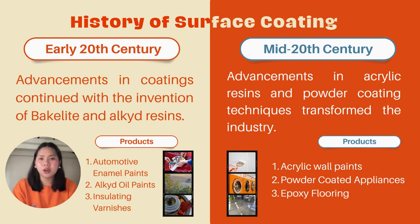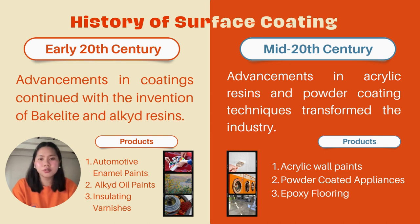The early 20th century witnessed a revolution in surface coating history, driven by scientific breakthroughs, industrialization, and the growing demand for more advanced and diverse coating materials. Innovations during this period laid the groundwork for the modern coating industry and expanded applications across various sectors. Products include automotive enamel paints, introduced for coating cars offering improved durability and a variety of colors; alkyd oil paints, quick-drying and durable oil-based paints used for both artistic and industrial purposes; and insulating varnishes used for coating electrical components and wires to prevent electrical leakage.